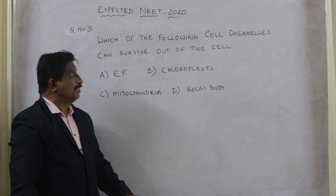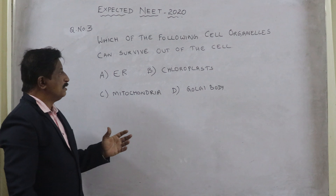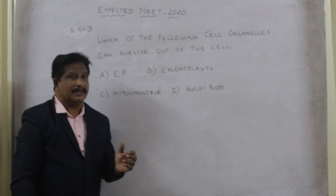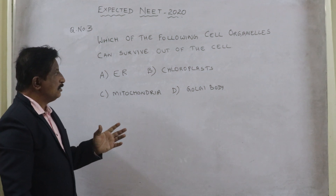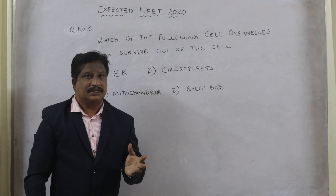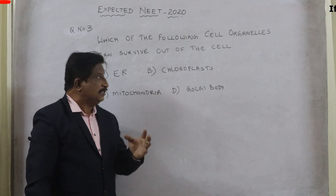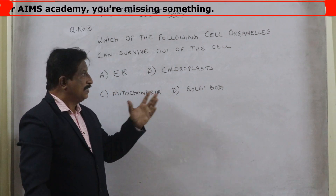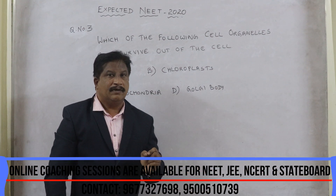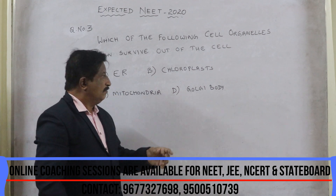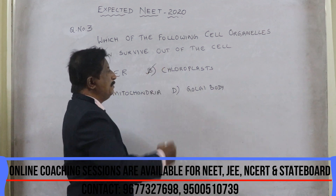Question number three: which of the following cell organelles can survive outside the cell? The options are: endoplasmic reticulum, chloroplasts, mitochondria, and Golgi apparatus. Chloroplasts and mitochondria are semi-autonomous (endosymbionts). Chloroplasts can be isolated in a test tube and, when illuminated, can perform photosynthesis. This is not possible with Golgi apparatus, mitochondria, or endoplasmic reticulum. So the correct answer is option B — chloroplasts.